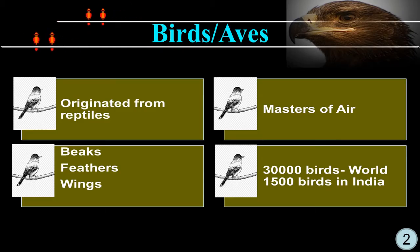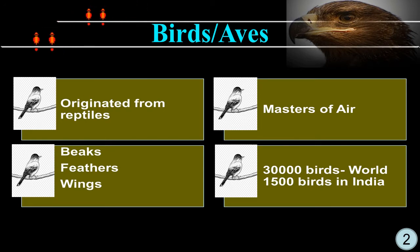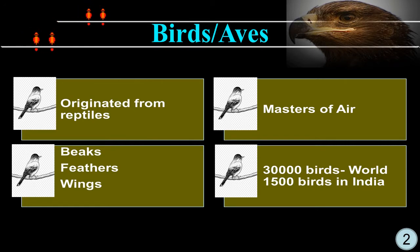What are birds? They are originated from reptiles. They have beaks, feathers, and wings, and therefore they are the masters of air and can fly across countries. Globally, we have 30,000 bird species, whereas India holds around 1,500 bird species.